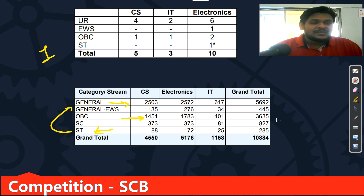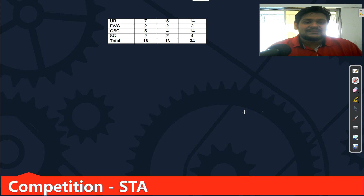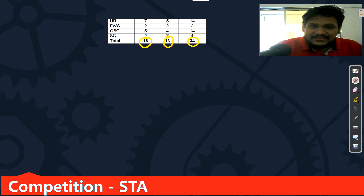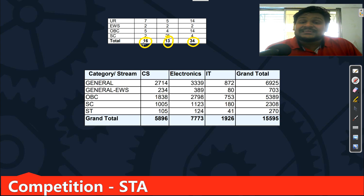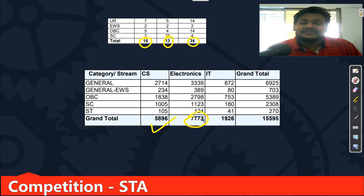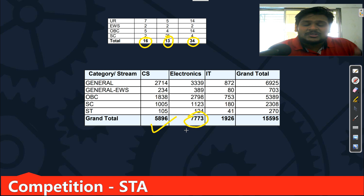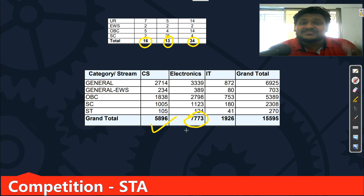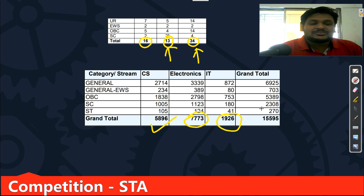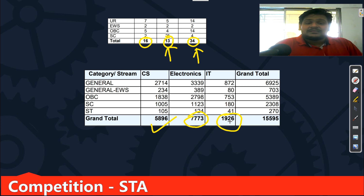For SDA — that is Scientific Assistant — total vacancies are: CAC 16, IT 13, and EC 34. Competition level: for CAC (16 posts), there are 5,896 applicants; for Electronics (34 posts), there are 7,773 applicants — the higher number is because MCA candidates were also eligible; and for IT (13 posts), there are 1,926 applicants. IT has relatively less competition, but still there are only 13 vacancies.